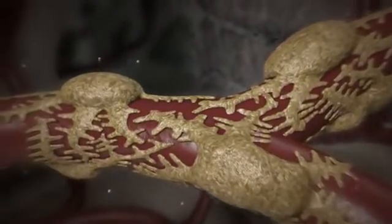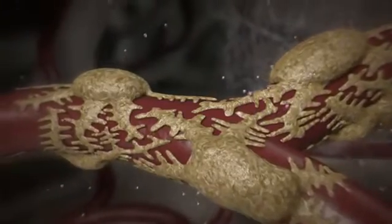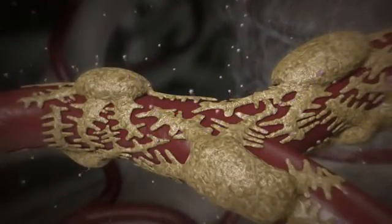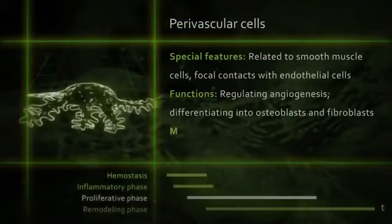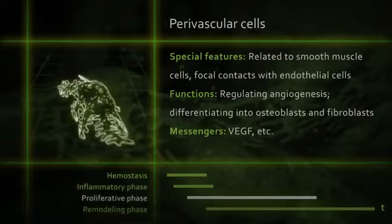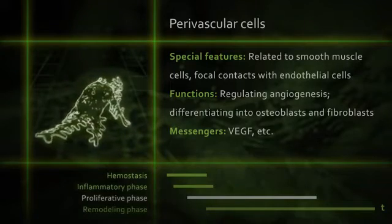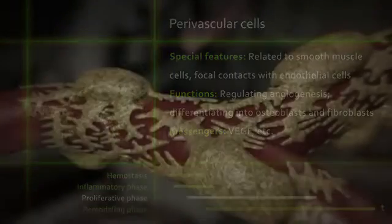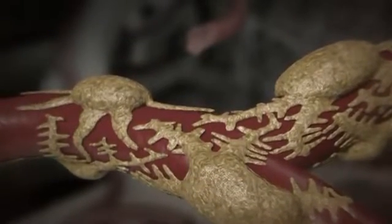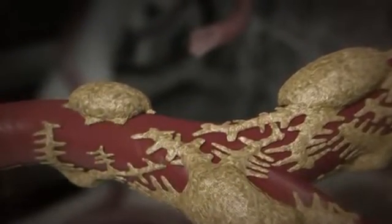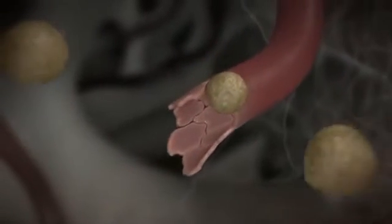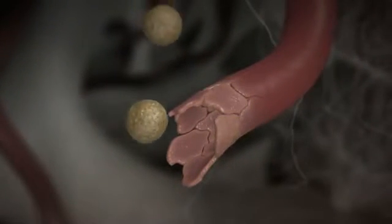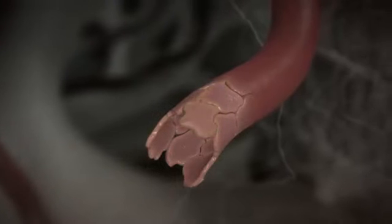Subsequently formed VEGF in turn influences perivascular cells — mesenchymal stem cells found on blood vessels. They migrate along the VEGF gradient into areas of low partial oxygen pressure, where they form new blood vessels that finally integrate into the existing vascular network. Angiogenesis restores the oxygen supply and forms the foundation of bone healing.